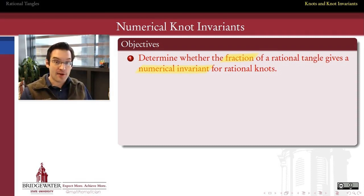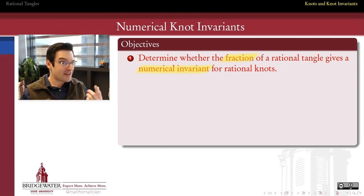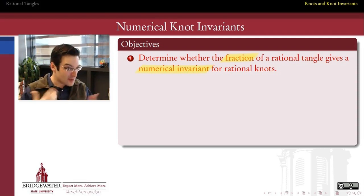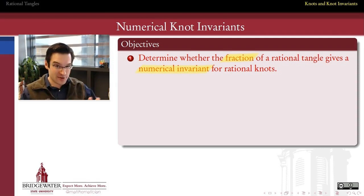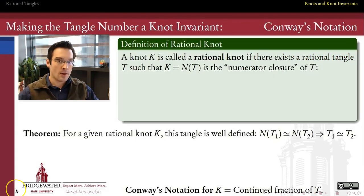What we're going to get out of this process is something called Conway's notation, which can be used to tabulate rational knots, and if you dial it up a little bit more, you can also use it to tabulate other knots that are not rational. This is all inspired by Colin Adams' exposition in chapter 2 of the knot book.